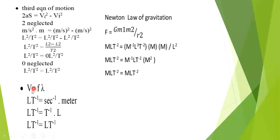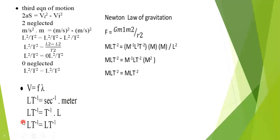Another important proof: v = fλ, where v is velocity, f is frequency, and λ is wavelength. Velocity dimension is LT⁻¹, frequency dimension is T⁻¹, and wavelength dimension is meter, symbol L. Solving T⁻¹ times L gives LT⁻¹, hence left-hand side equals right-hand side.